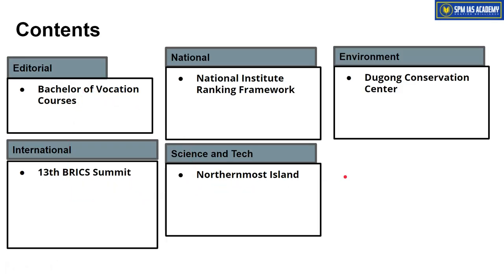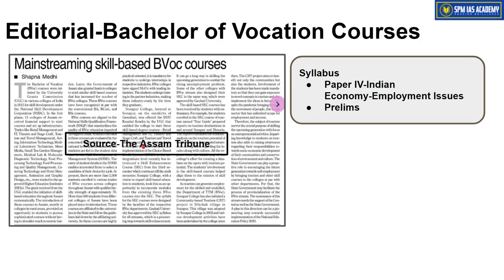This is the list of topics we will be covering from today's newspaper. The first article is taken from the editorial segment — it talks about Bachelor of Vocation courses. This topic is important from our syllabus Paper 4, Indian economy point of view, especially from an employment issues point of view.